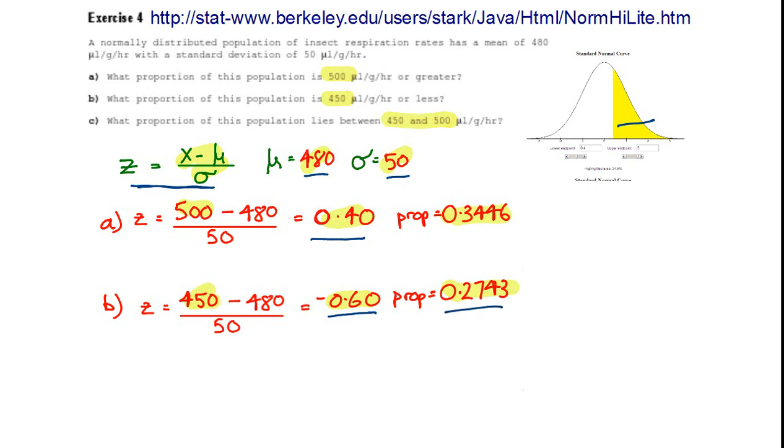We have 0.2743 of the population is below that rate of 450, and that's the part of the curve in here.